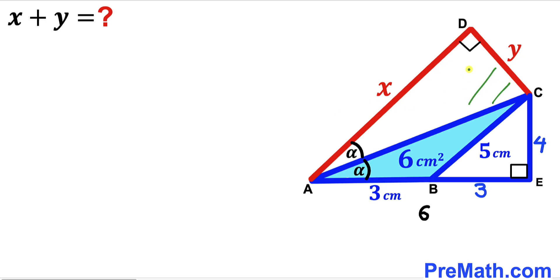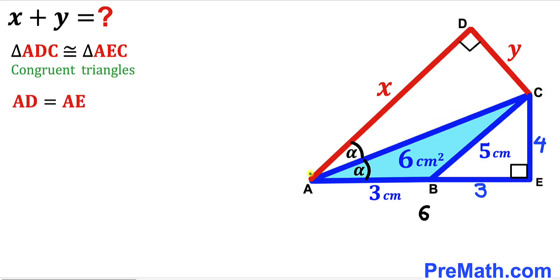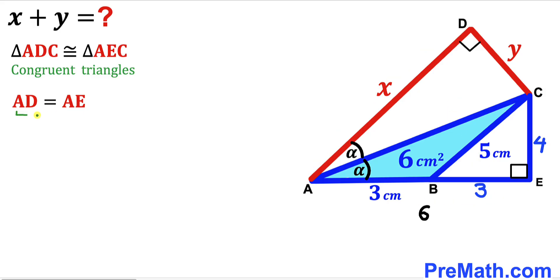Now let's focus on right triangle ACD and right triangle AEC. Both are congruent according to the Angle-Side-Angle congruency theorem: the marked angles alpha are congruent, both have a 90-degree angle, and side AC is common to both. Therefore, AD equals AE and CD equals CE.